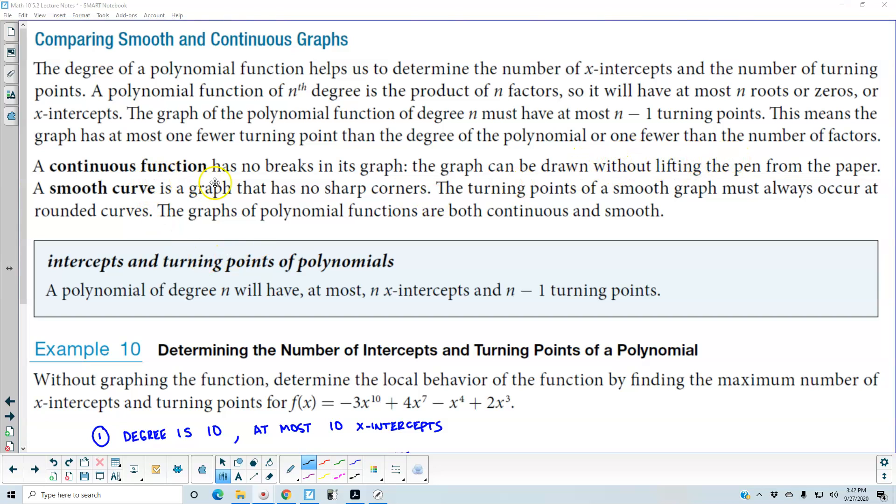A continuous function has no breaks in its graph. The graph can be drawn without lifting the pen from the paper. A smooth curve is a curve that has no sharp corners. The turning points of a smooth graph must always occur at rounded curves. The graphs of polynomial functions are both continuous and smooth.